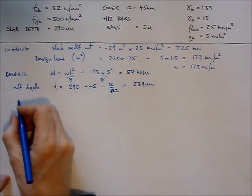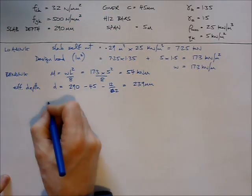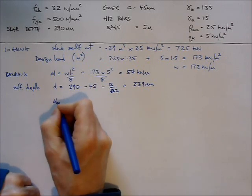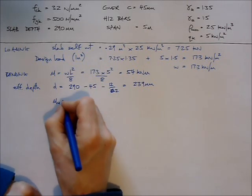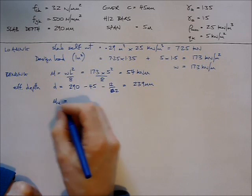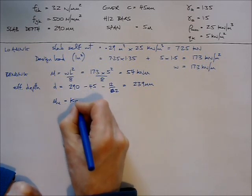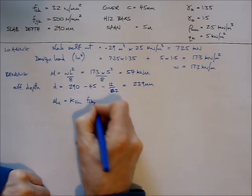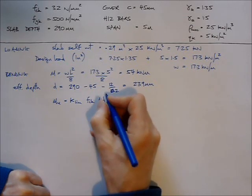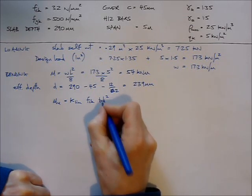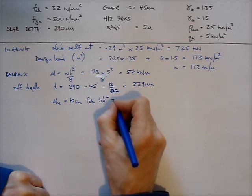Now what I can do is calculate MU, which is the ultimate bending moment capacity of the slab with no compression reinforcement. That comes from this formula: K_lim × f_ck × b × d². You can see it's handy to know d before I start with this.